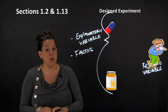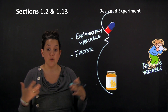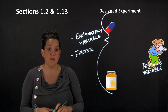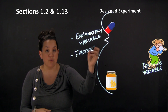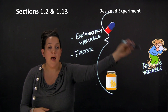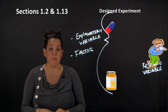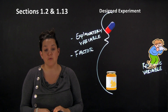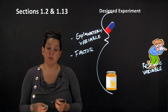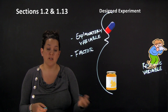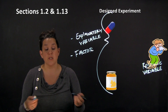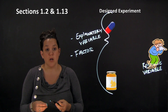In a designed experiment, you ideally randomly assign people to different treatments and then determine whether your explanatory variable has an effect on your response variable. This is different from an observational study, where you simply observe. In a designed experiment, you actually impose conditions on your subjects.